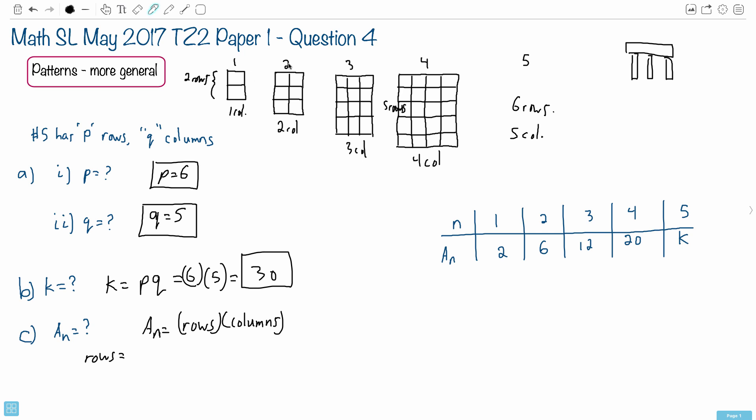You can see when n is 1, it's 2. When it's 2, it's 3. When it's 3, it's 4 rows. So we can just say to whatever n was, just add 1 to it.